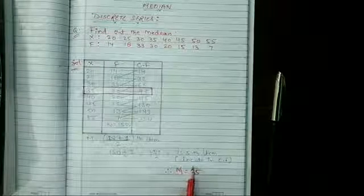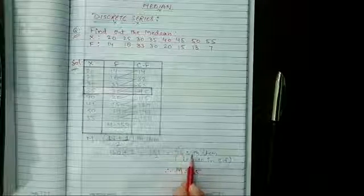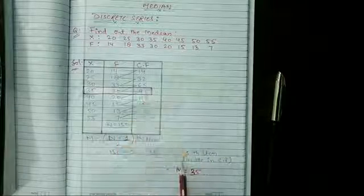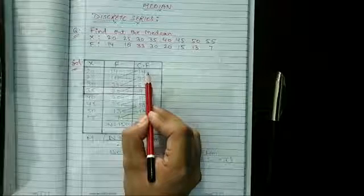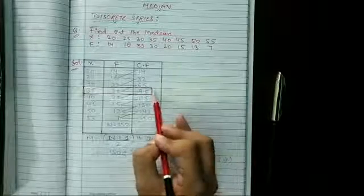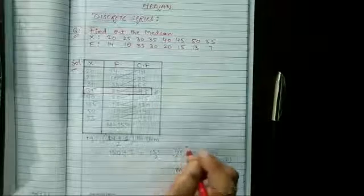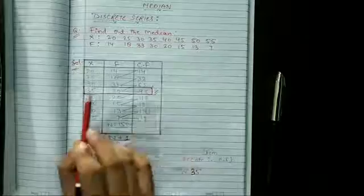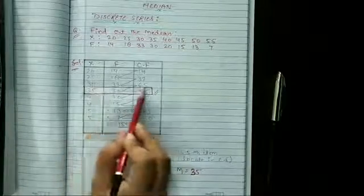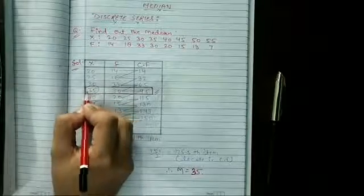Now what we will do? We have to locate this item in cumulative frequency. We have to locate 75.5 in cumulative frequency from top to bottom. Will 75.5 locate in 14? No, because 14 is smaller. Not here, not here, but here it will locate. So the first number in which this number locates, that will be called the median class. So here we have to encircle this and the X of this class will become the median.